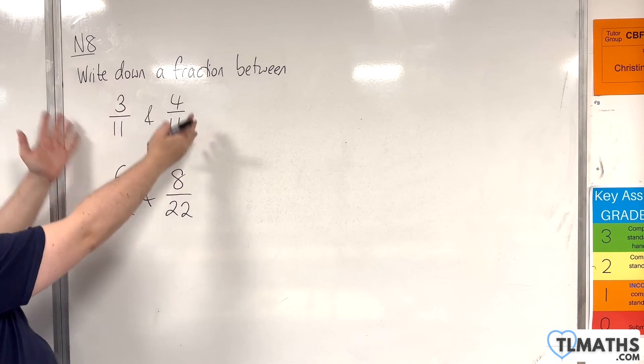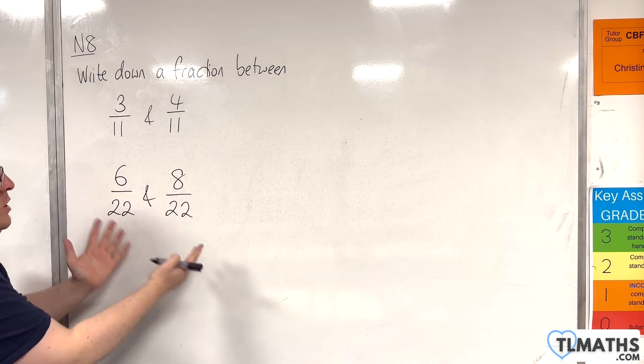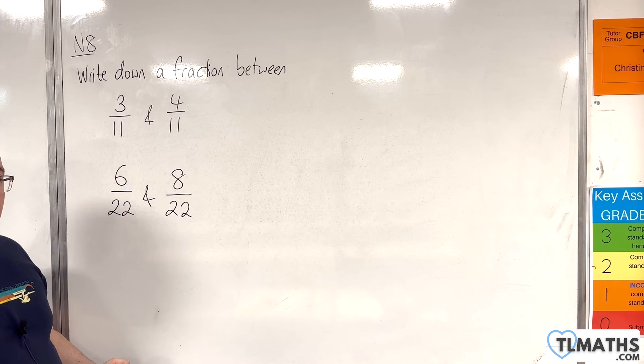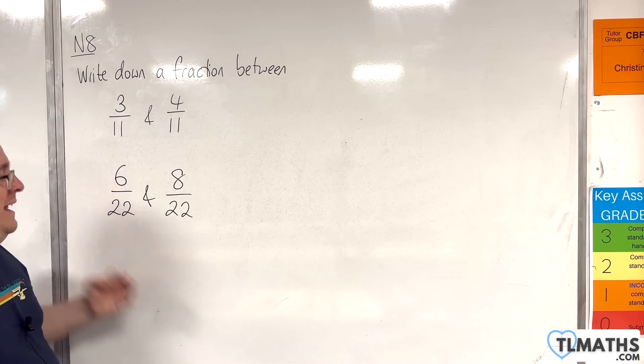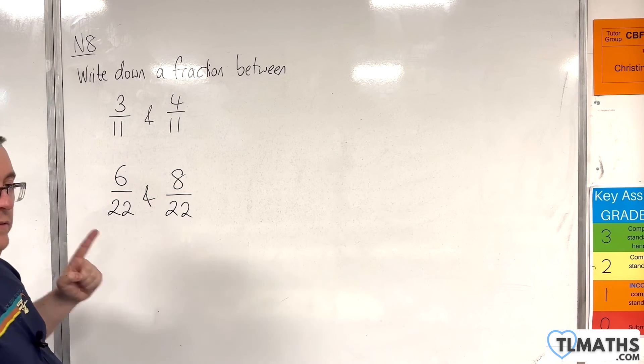So, rather than looking at a fraction between 3 elevenths and 4 elevenths, I'm now looking at a fraction between 6 over 22 and 8 over 22. And it's clear that there is a fraction between these two, and it would be 7 over 22.